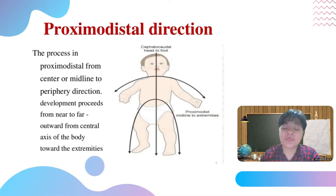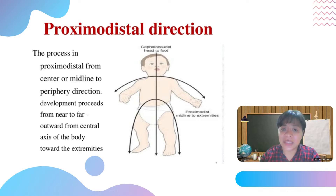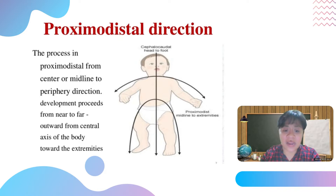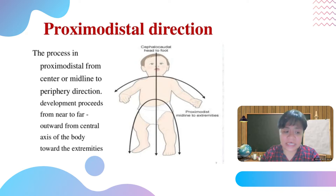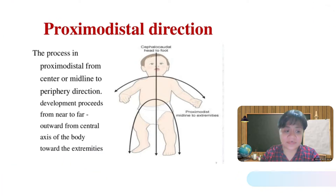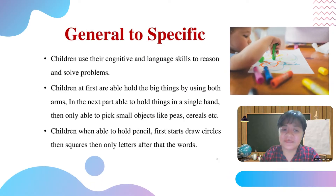The process in proximodistal direction is from the center or midline to periphery. Development proceeds from near to far, outward from the central axis of the body toward the extremity. General to specific.